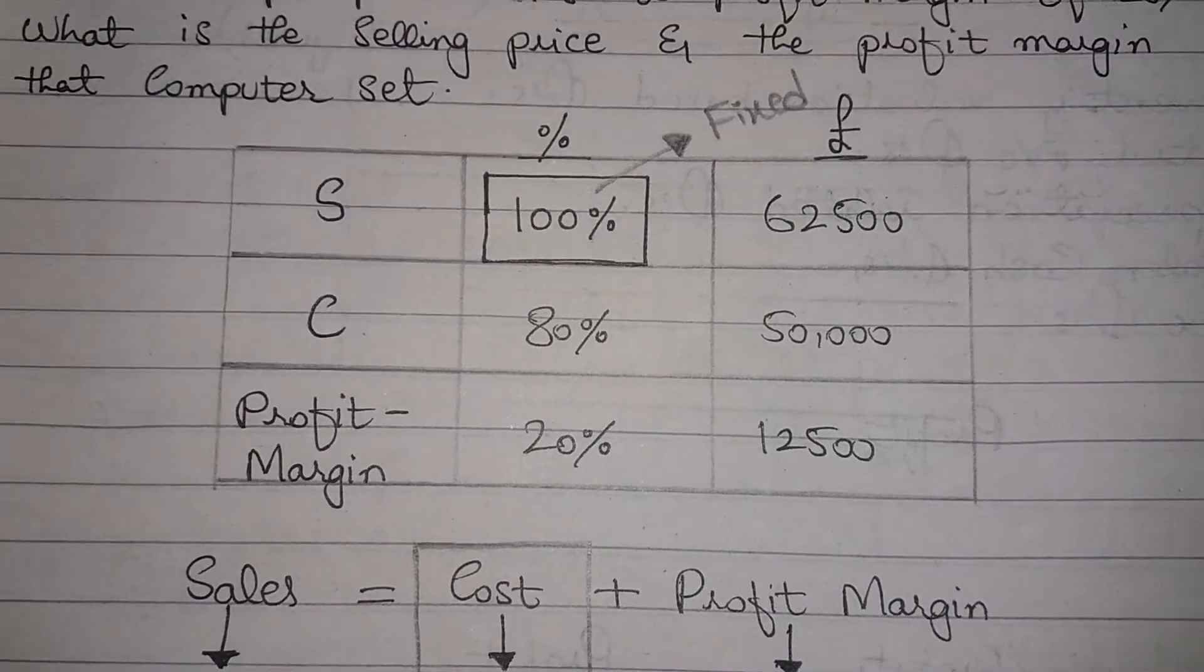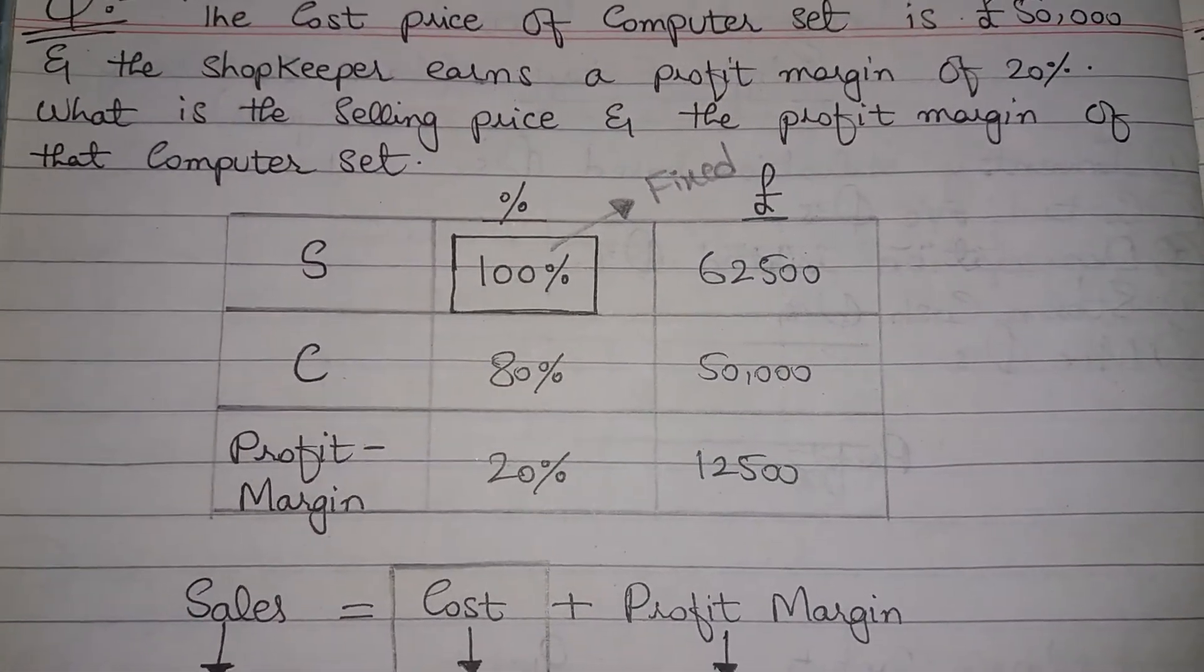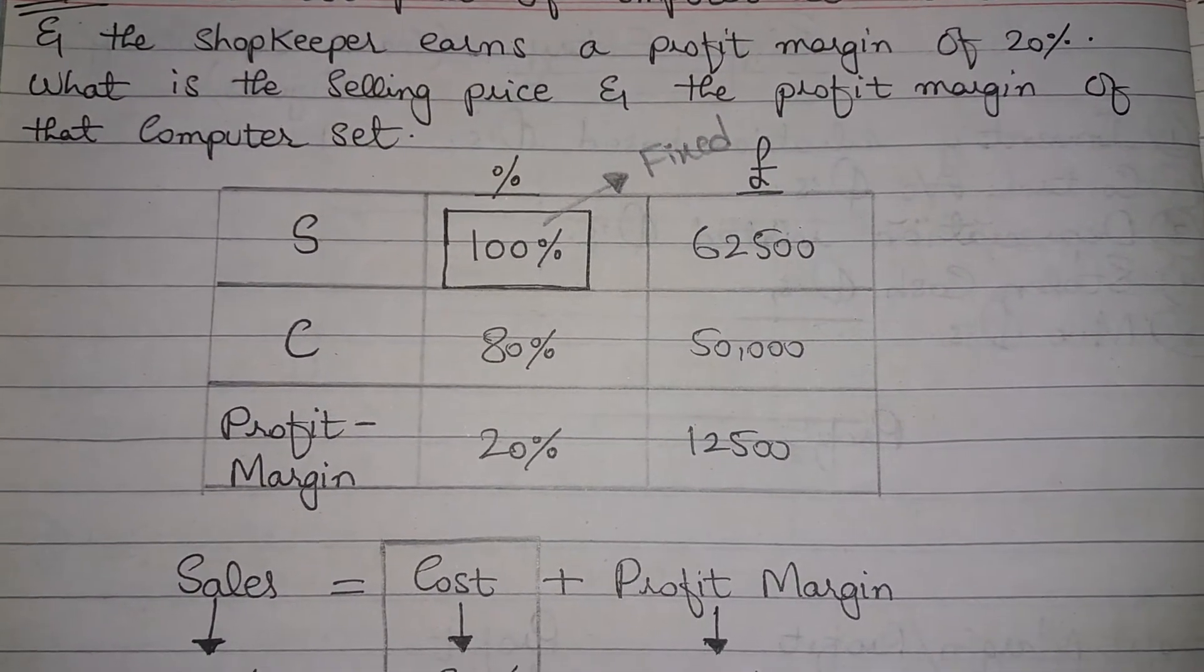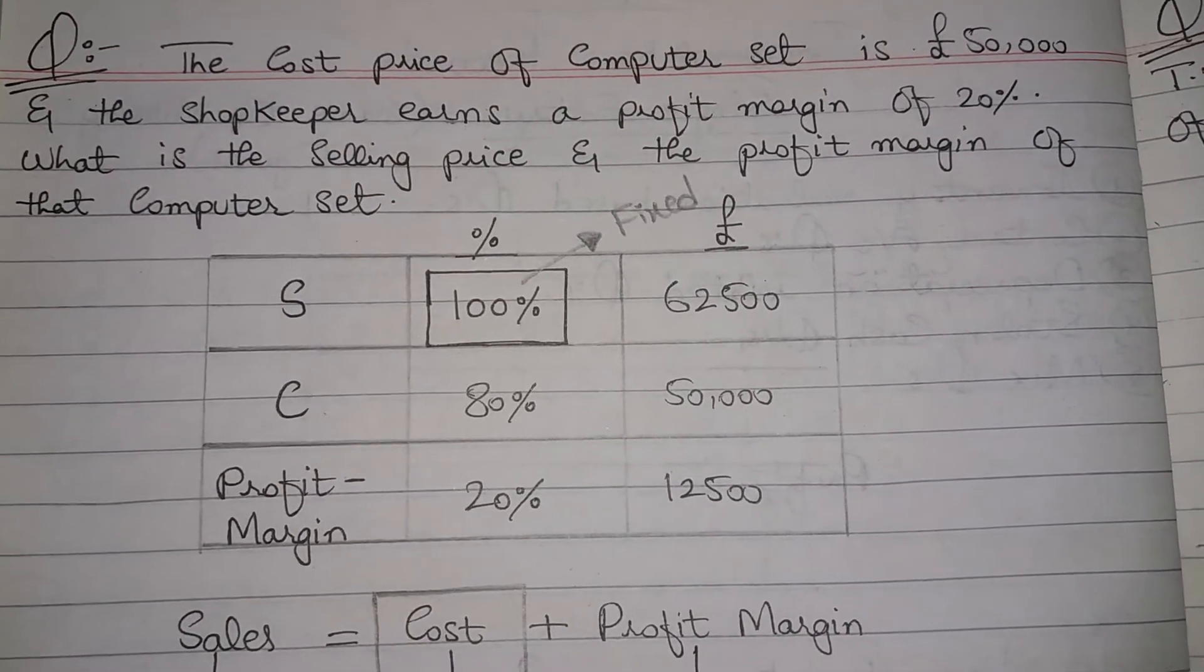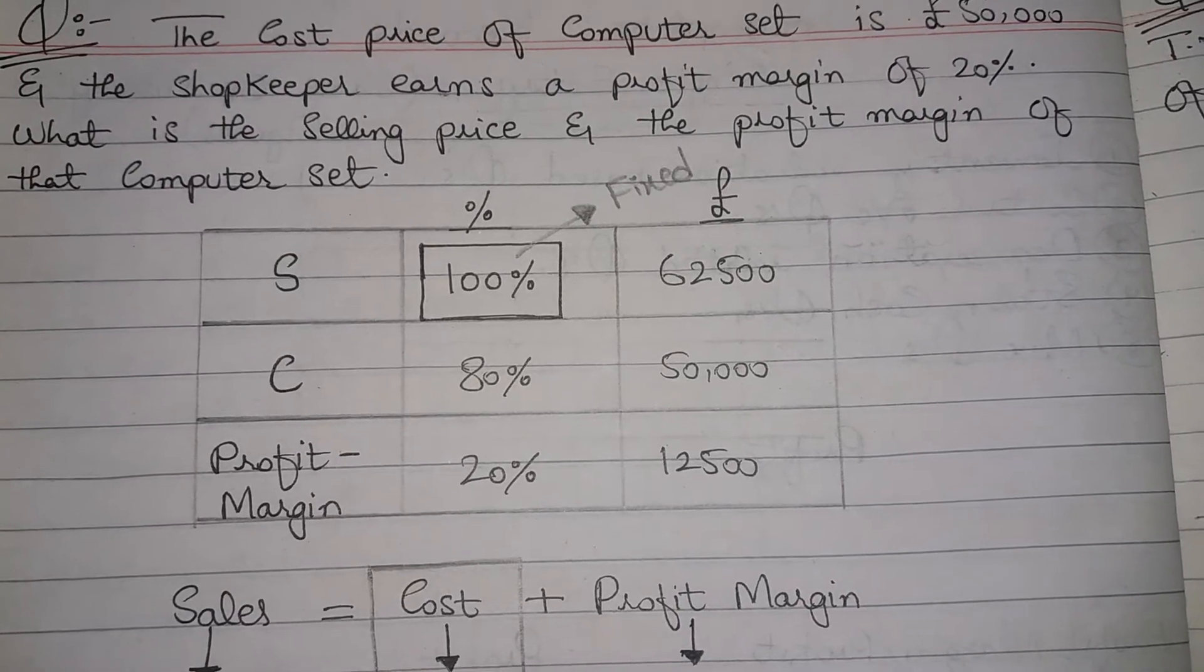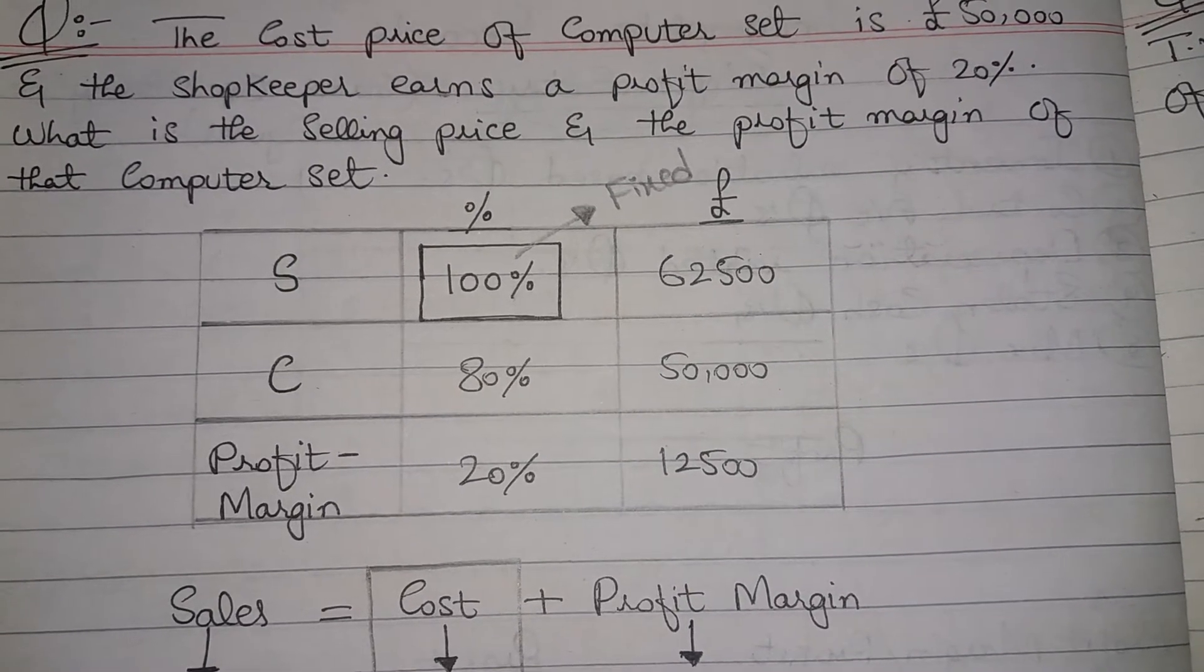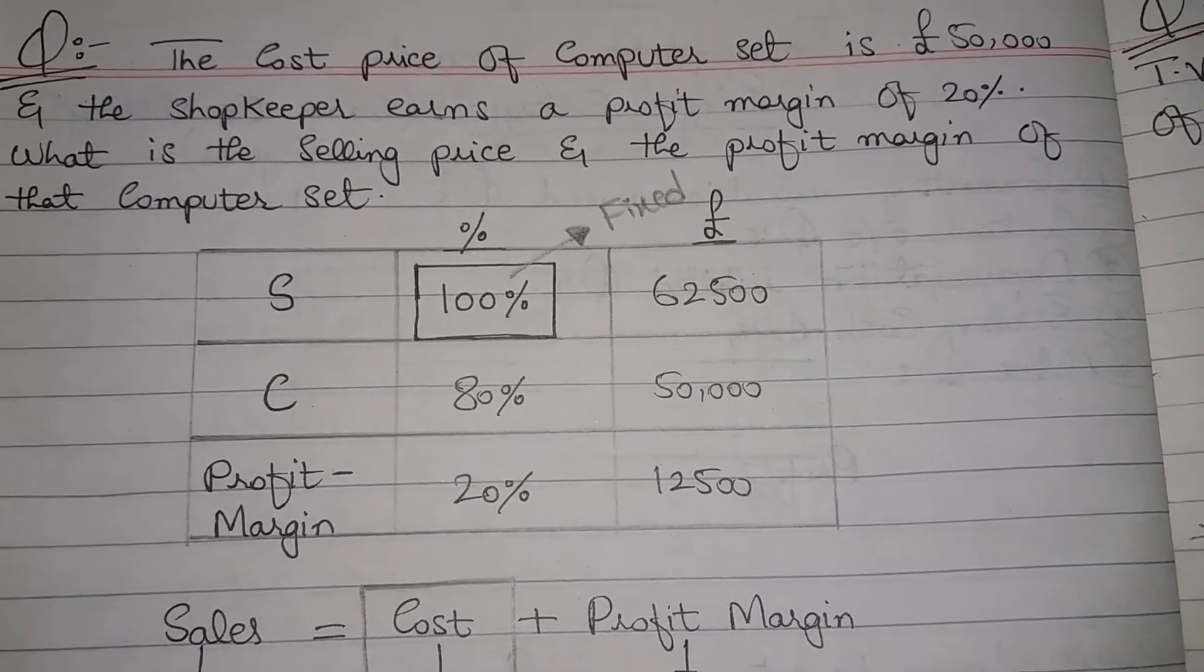So if you want to calculate selling price, divide 50,000 with 80%. And if you want to calculate profit, divide 50,000 with 80%, then multiply with 20%. You will reach your profit.